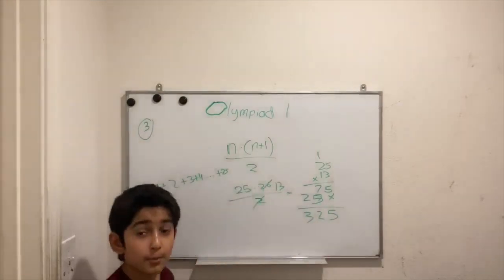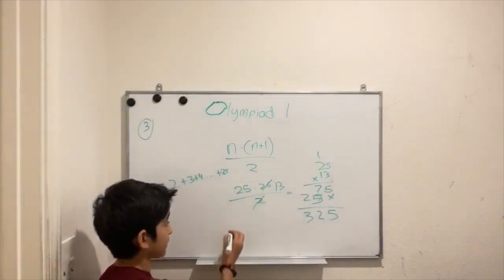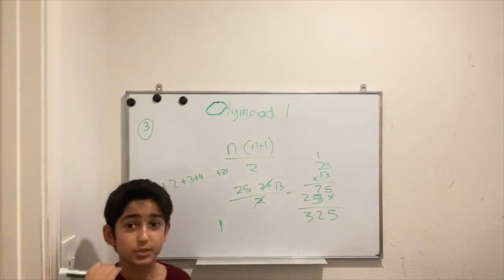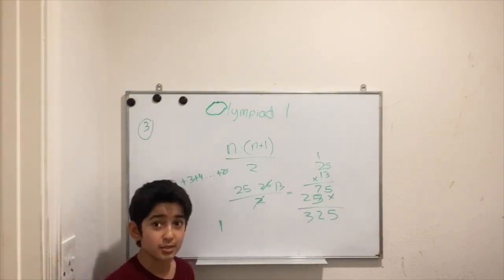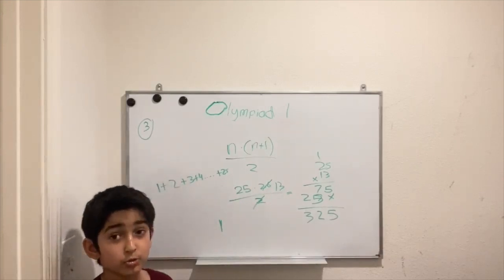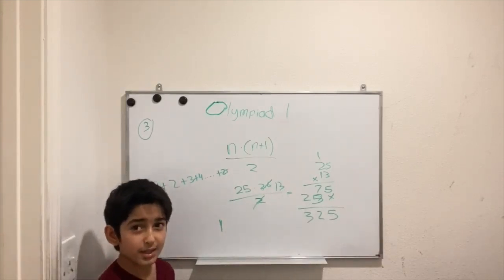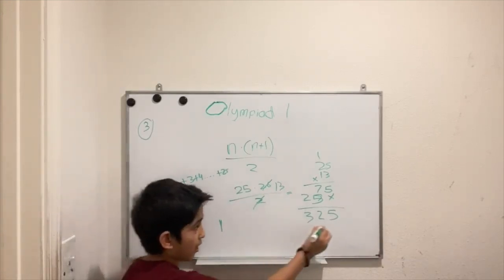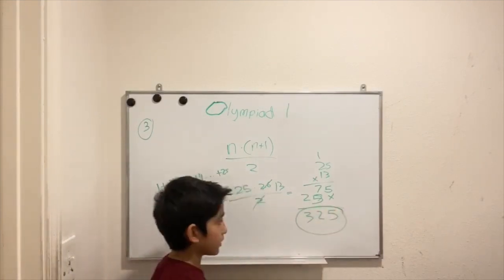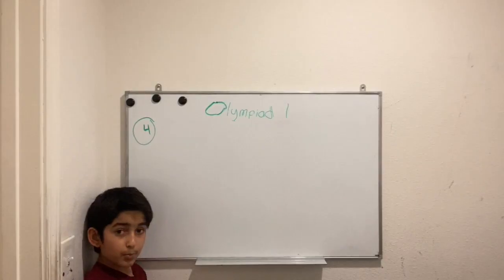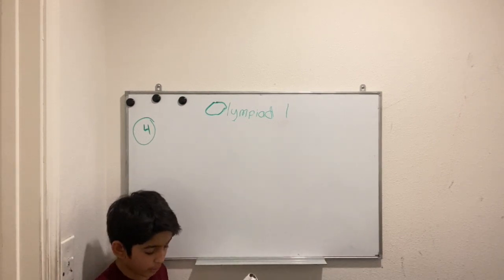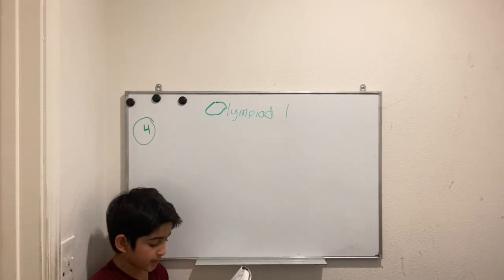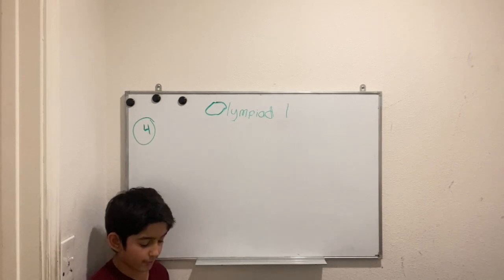Note: this formula only works if the first number of the sequence is 1. So if a friend asks what is 26 plus 25, do not say 325 — that is not the answer. Our answer here is 325.